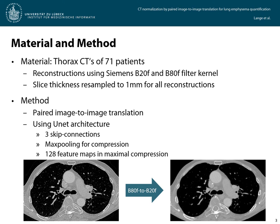We used the U-Net architecture with 3 skip connections, max pooling for compression, and 128 feature maps at maximum compression for a pairwise image-to-image translation approach from B80F images to B20F images.